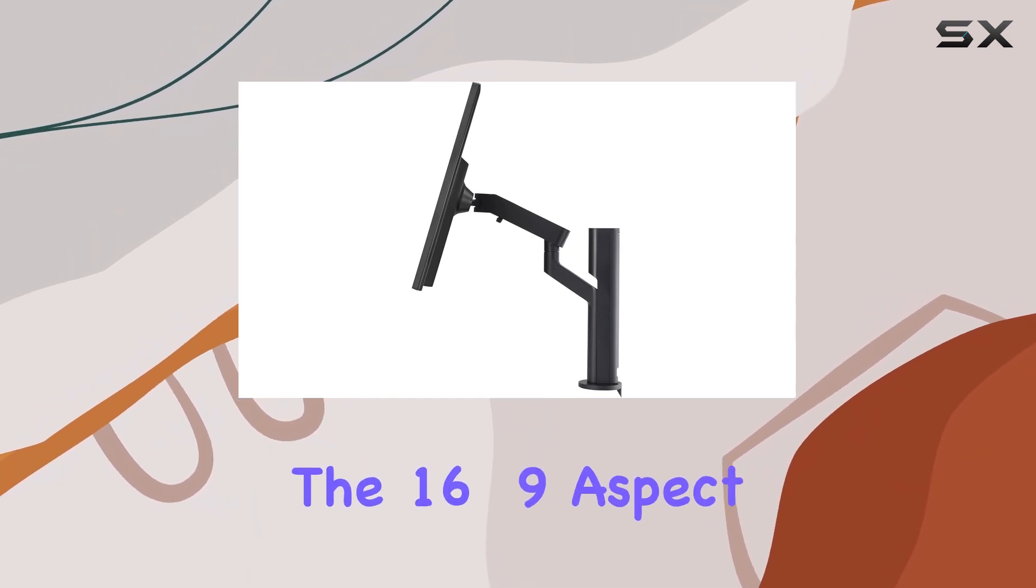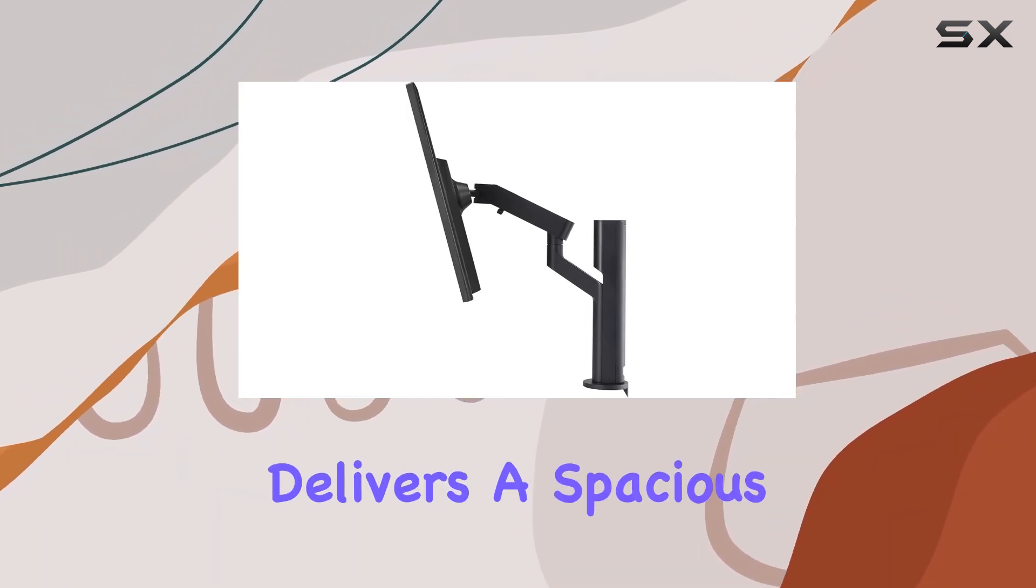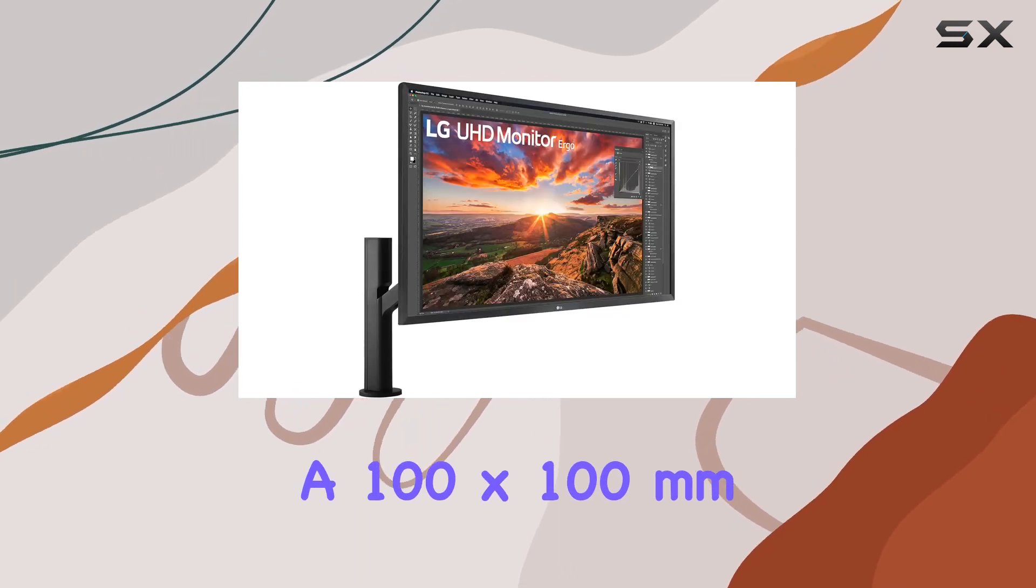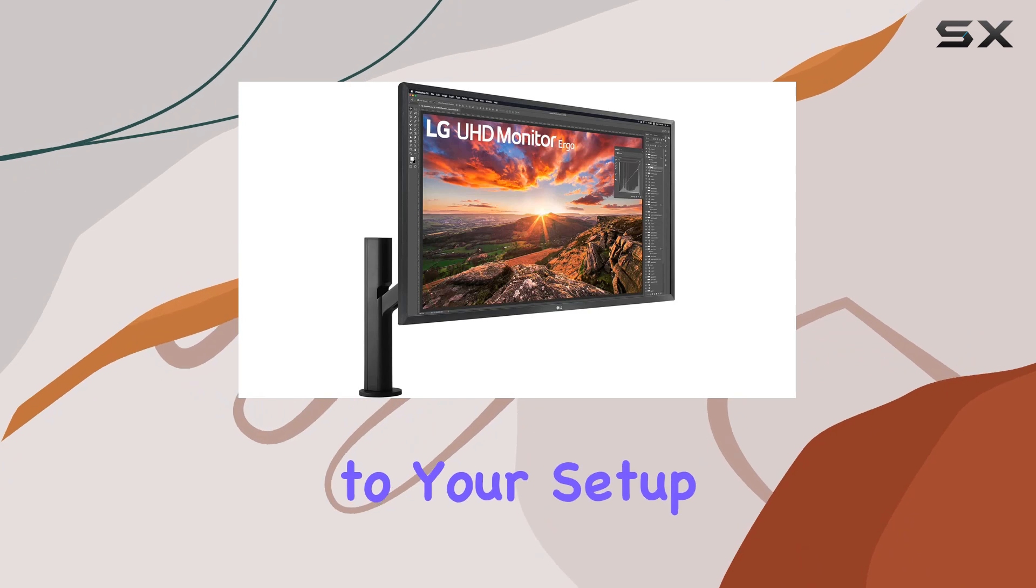The 16 to 9 aspect ratio on this 32-inch screen delivers a spacious view, and the wall-mountable feature with a 100x100mm VESA pattern adds flexibility to your setup.